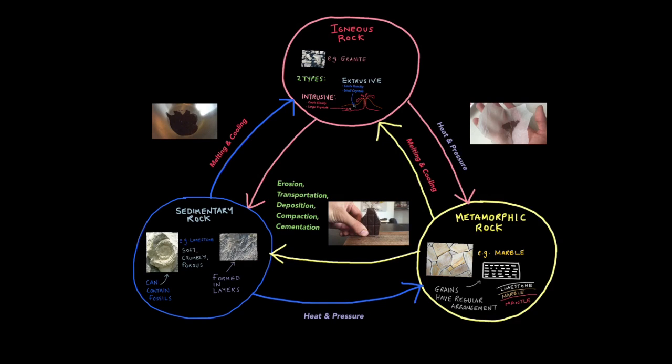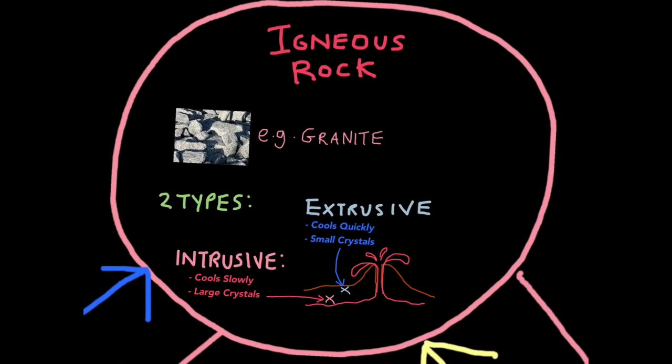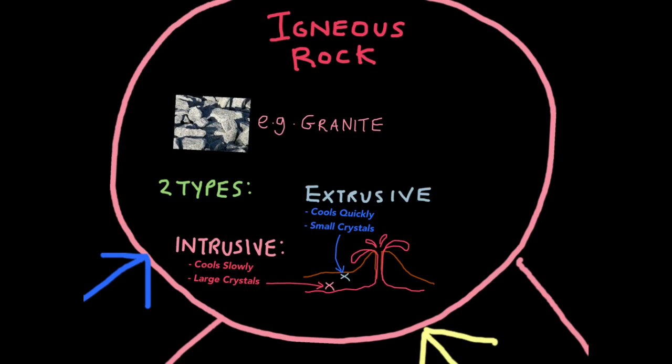Before I explain the rock cycle let me give you an introduction to the three different types of rocks. The first one is igneous rock. Think of the word ignite for fire, so they're fire rocks forged from magma. A common example often used for kitchen work surfaces is the very hard rock granite. Igneous rocks are very hard, very dense with interlocking grains. They also contain crystals.